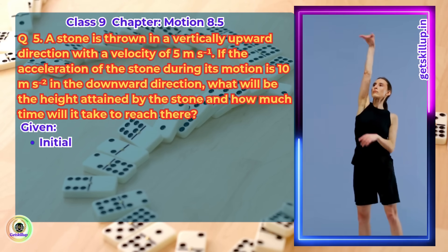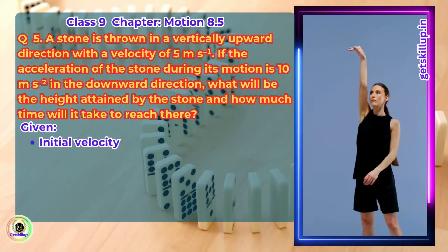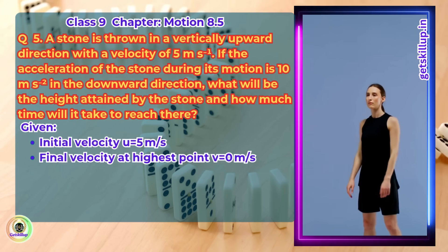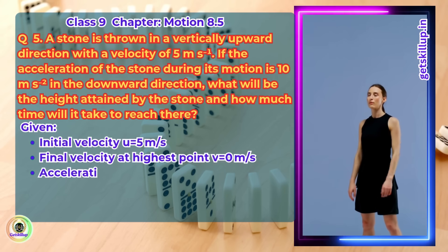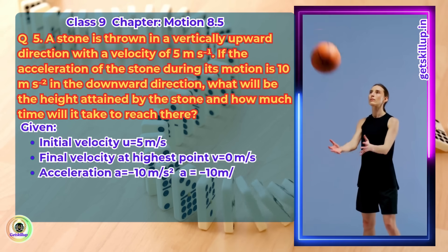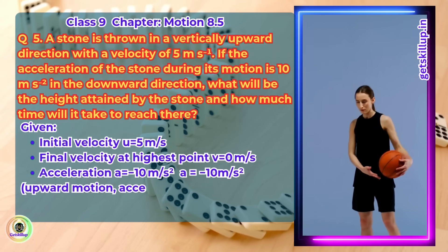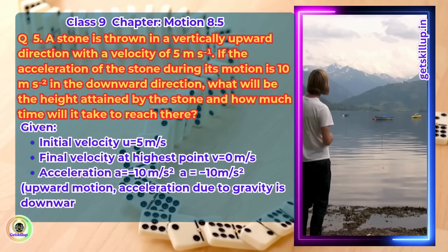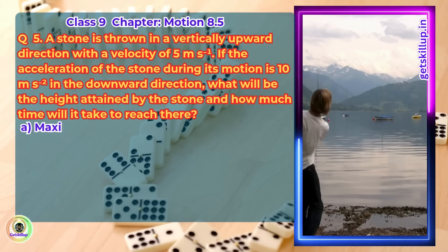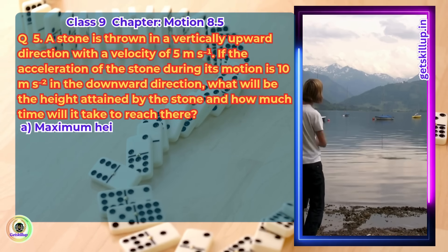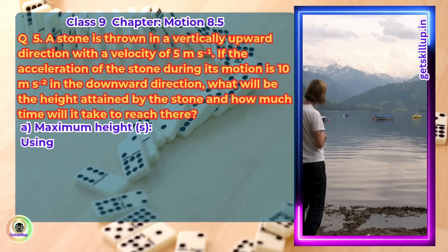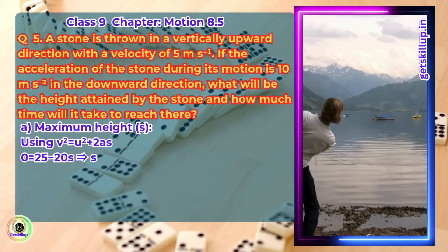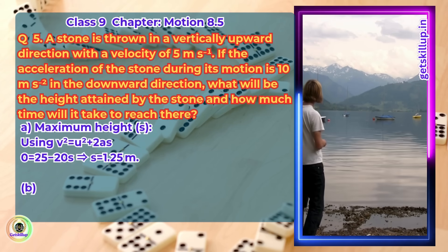Answer. Given: initial velocity u equals 5 meter per second, final velocity at highest point v equals 0 meter per second, acceleration a equals minus 10 meter per second squared (upward motion, acceleration due to gravity is downward). Maximum height s: using v squared equals u squared plus 2as, 0 equals 25 minus 20s, which gives s equals 1.25 meter.